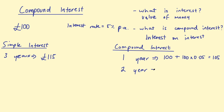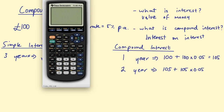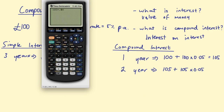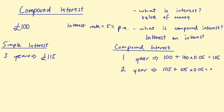In the second year, we take the interest, add it on, and then take interest on that interest. Our starting amount in the second year is £105. We're going to do 105 multiplied by 0.05 to find 5% of £105, then add that onto our £105. You might like to pull out your calculator here. That gives us an amount after two years of £110.25.